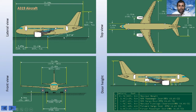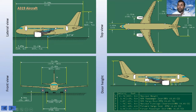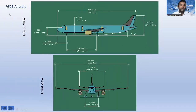You can see the top view and the door heights in the diagram. This is the front view as well. You can pause the video to go through the dimensions if you are interested. Now let's move on to the A321 aircraft.